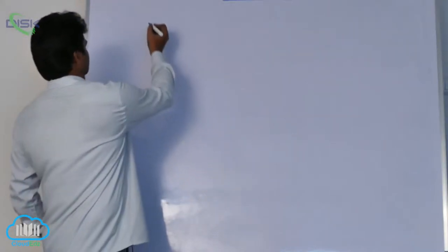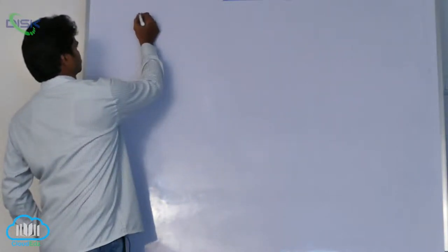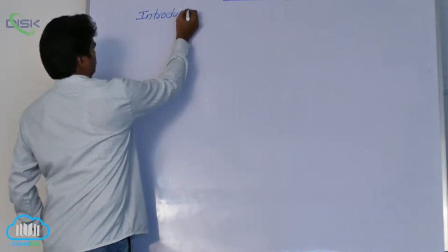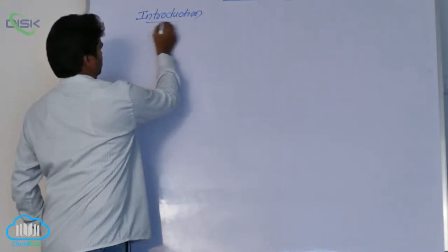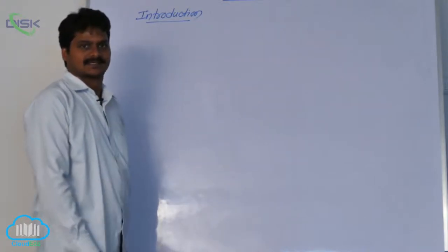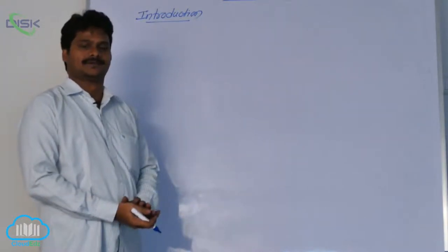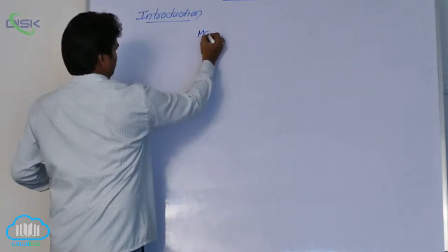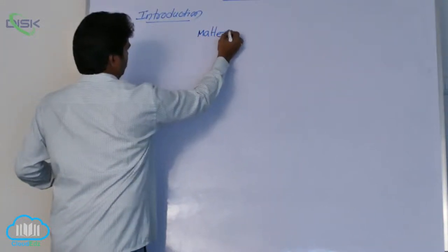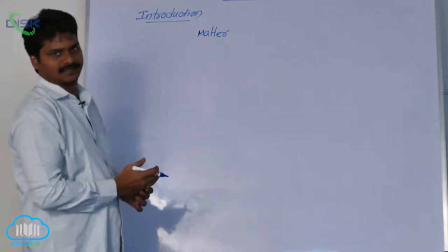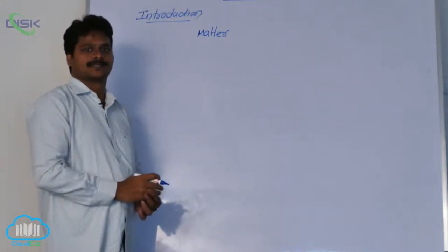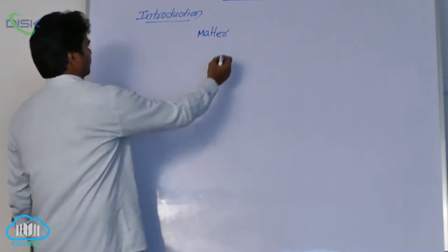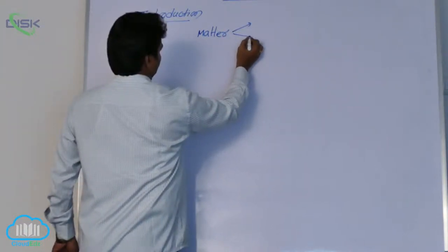Let us see the introduction of solid state. Earlier in first year, in states of matter, we discussed about the three states of matter that are possible. Matter is anything that has some mass and occupies some volume. Matter exists in three states we know that.